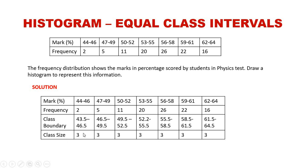To confirm equal class sizes, subtract the lower class boundary from the upper class boundary. The result is 3 for all class boundaries, meaning all class intervals have an equal class size of 3.